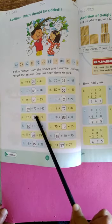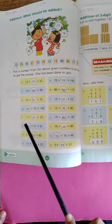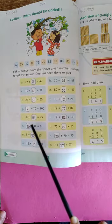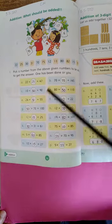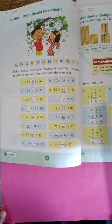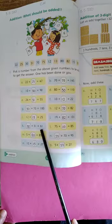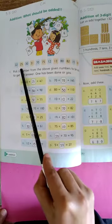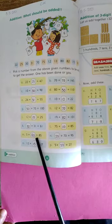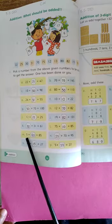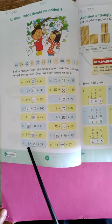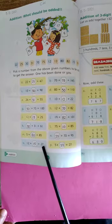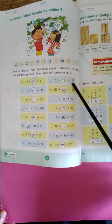Ninety five aayega. Ab yehaan koi number nahi diya gaya. Seventy plus seventy five is equal to one hundred and forty five.